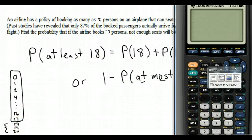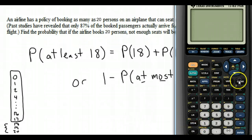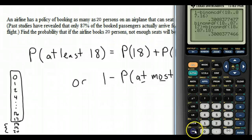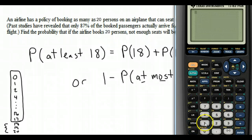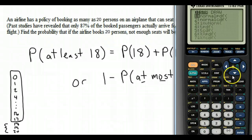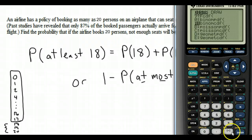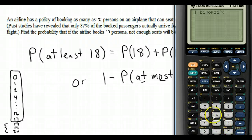So what I'm going to do on the calculator is 1 minus the binomial CDF. Binomial CDF starts at 0 and goes to where we tell it to stop. So n is 20. They booked 20 persons, that's what n is going to be. 0.87 is the probability that somebody shows up. And then what are we subtracting? We're stopping at 17.